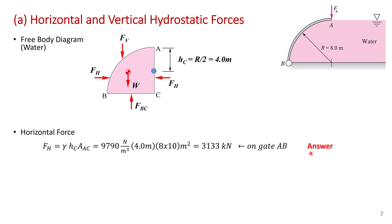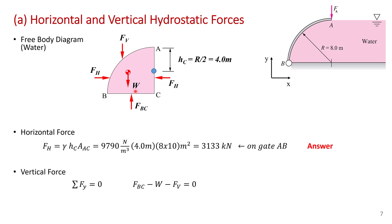We can now solve for the vertical force. This requires applying static equilibrium in the vertical direction: the sum of forces in Y equals zero. FBC is upward (positive), so FBC minus W (the weight of the water) minus FV equals zero. Therefore, FV equals FBC minus the weight of the water. We now need to find FBC and the weight of that quarter circle of water.